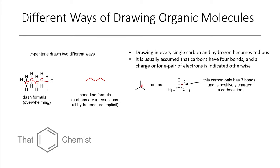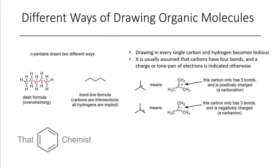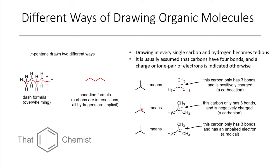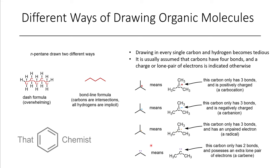The reason we do this is that drawing in every single carbon and hydrogen often becomes tedious. For the most part, carbons will have four bonds — single, double, or triple — to other carbons or elements. There are exceptions: a positively charged carbon can have only three connections, which is a carbocation. We can also have a carbanion, which has a net negative charge. Additionally, a radical has one unpaired electron and no fourth connection. Finally, a carbene has two paired electrons on the same carbon with only two connections — these tend to be quite reactive.